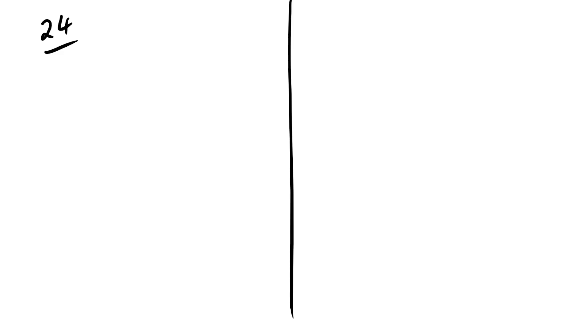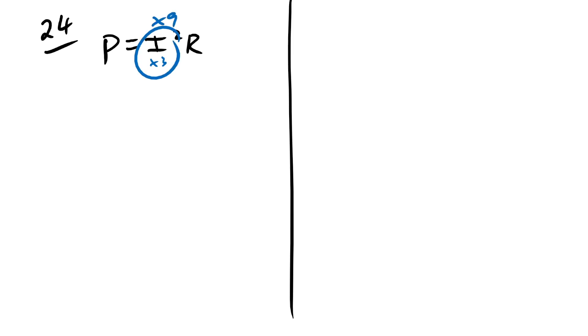Question 24: two resistors with alternating current. Find the mean power dissipated. Power = I²R. The RMS current increases by ×3, so I² goes up by ×9. Resistance halves. Net change: 9 × ½ = 4.5. Remember when calculating power you must use RMS values. Answer is B.